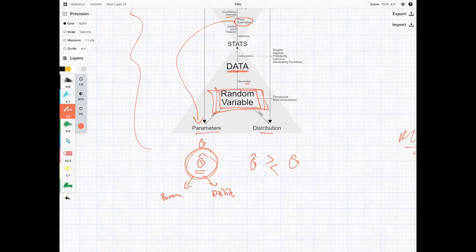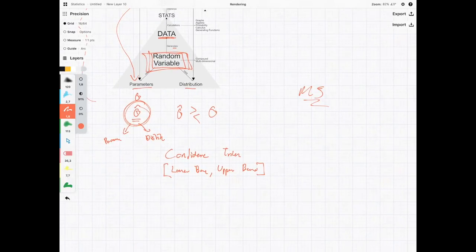So what we do is we construct something known as a confidence interval and essentially this is a range. We have a lower bound and we have an upper bound and in the course we look at various things.